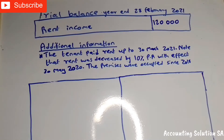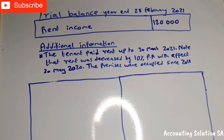Under the income statement, we have to record only up to 28 February, but in this case the tenant paid until March, which means we have to subtract the amount for March. Remember, we cannot say 120,000 divided by 13, because there is a decrease of 10%. We have to calculate the rent amount before the decrease so that we can calculate the rent for March.